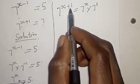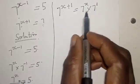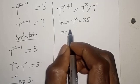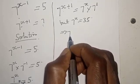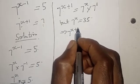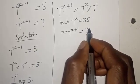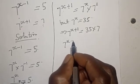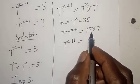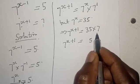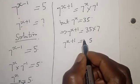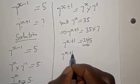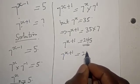Since 7 raised to power x is equal to 35, anywhere you see 7 raised to power x you put 35. So 7 raised to power x plus 1 is equal to 35 times 7. That gives us 7 times 35: 7 times 3 is 21, plus 7 times 5 is 35, so 210 plus 35 is 245.